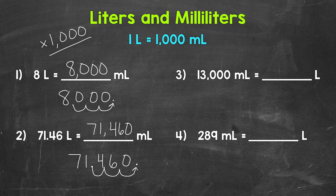To recap: when we go from liters to milliliters, we multiply by 1,000, and we can do that by moving the decimal three times to the right. Let's move on to number three, where we have 13,000 milliliters equals how many liters. Each group of 1,000 milliliters equals a liter, so we need to find how many groups of 1,000 are in 13,000 — meaning 13,000 divided by 1,000. That gives us 13.